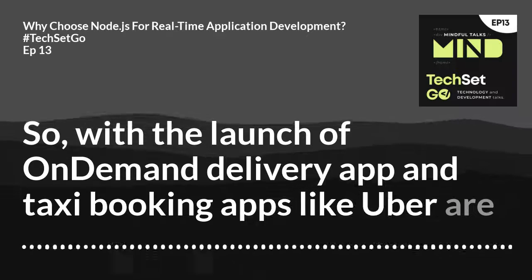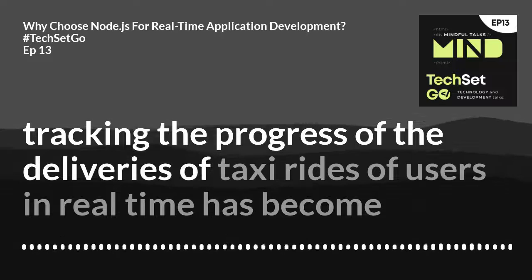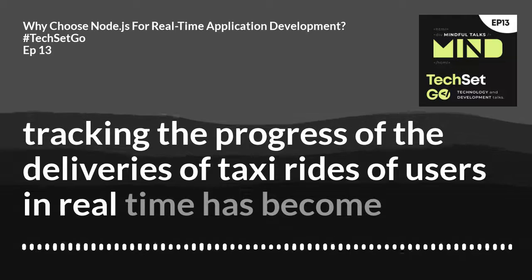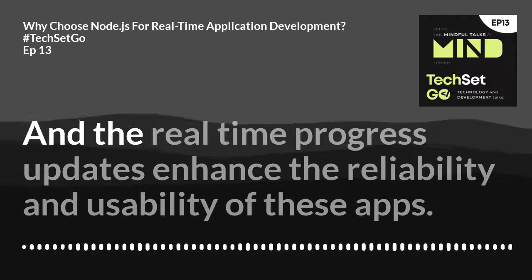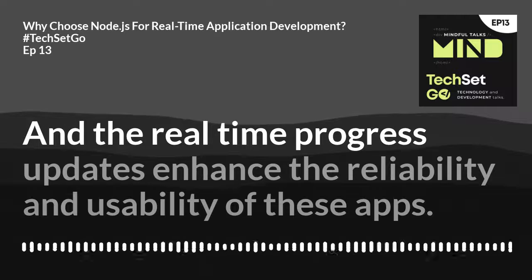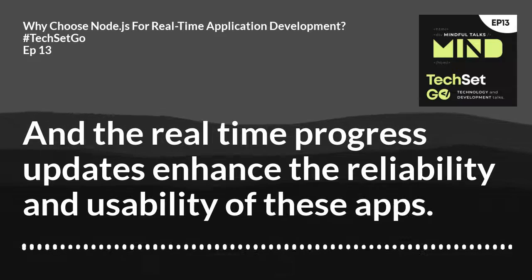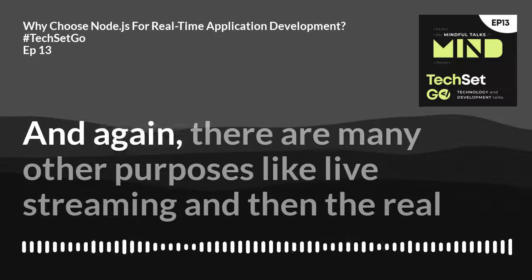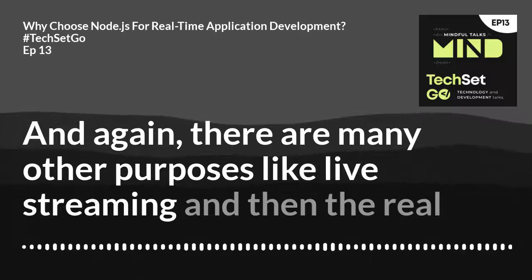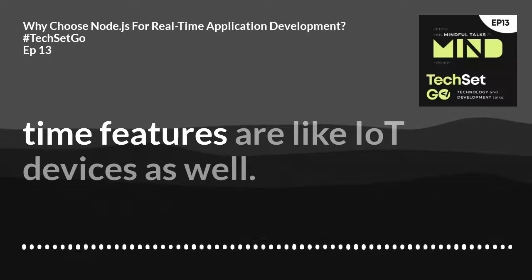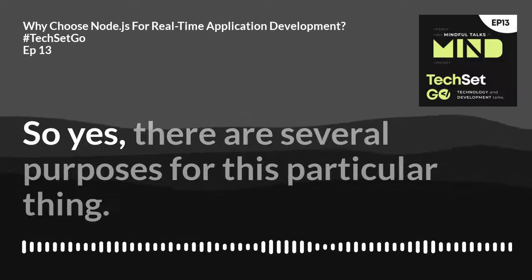Even real-time tracking — with the launch of on-demand delivery apps and taxi booking apps like Uber, tracking the progress of deliveries and taxi rides in real time has become a necessity. Real-time progress updates enhance the reliability and usability of these apps. There are also many other purposes like live streaming and real-time features in IoT devices.